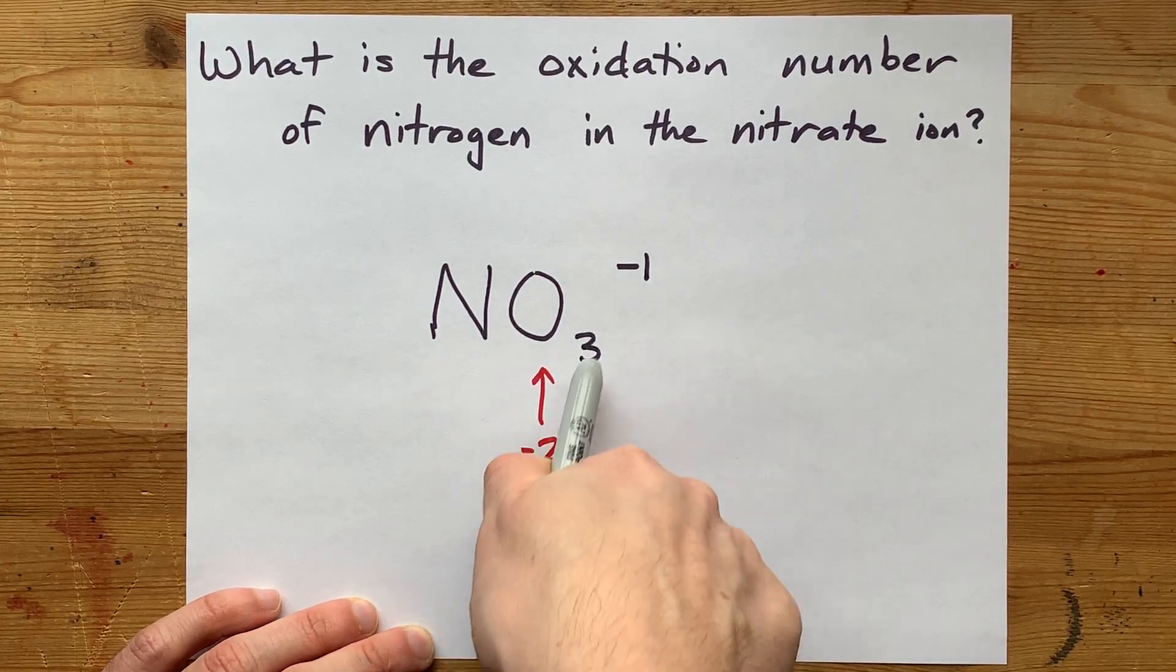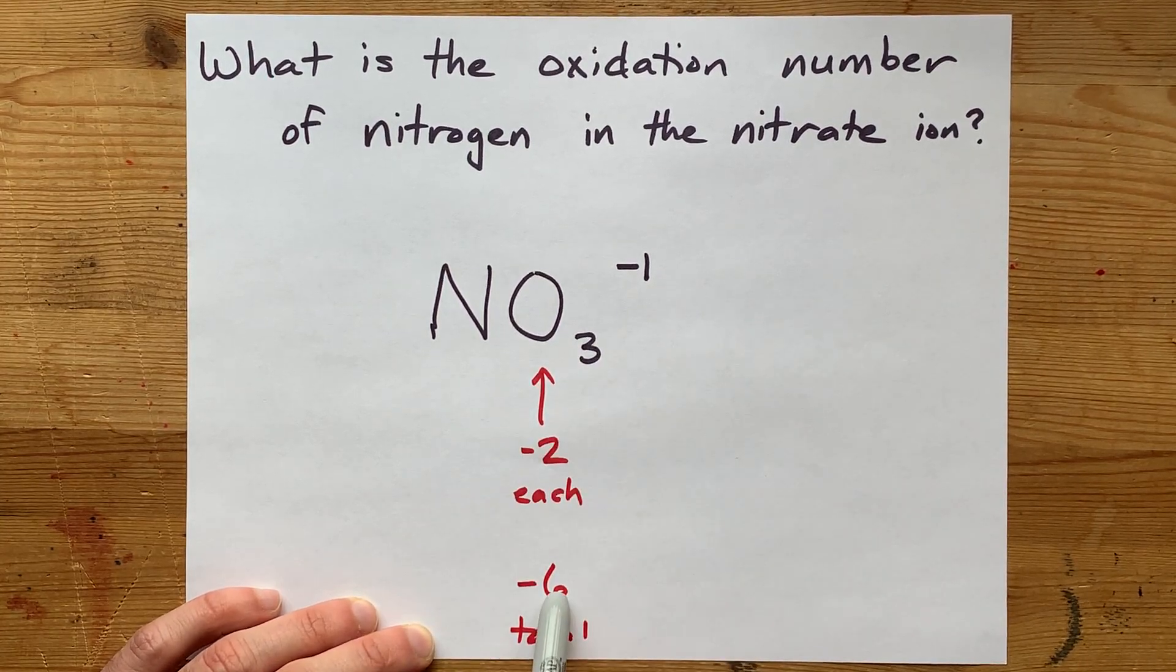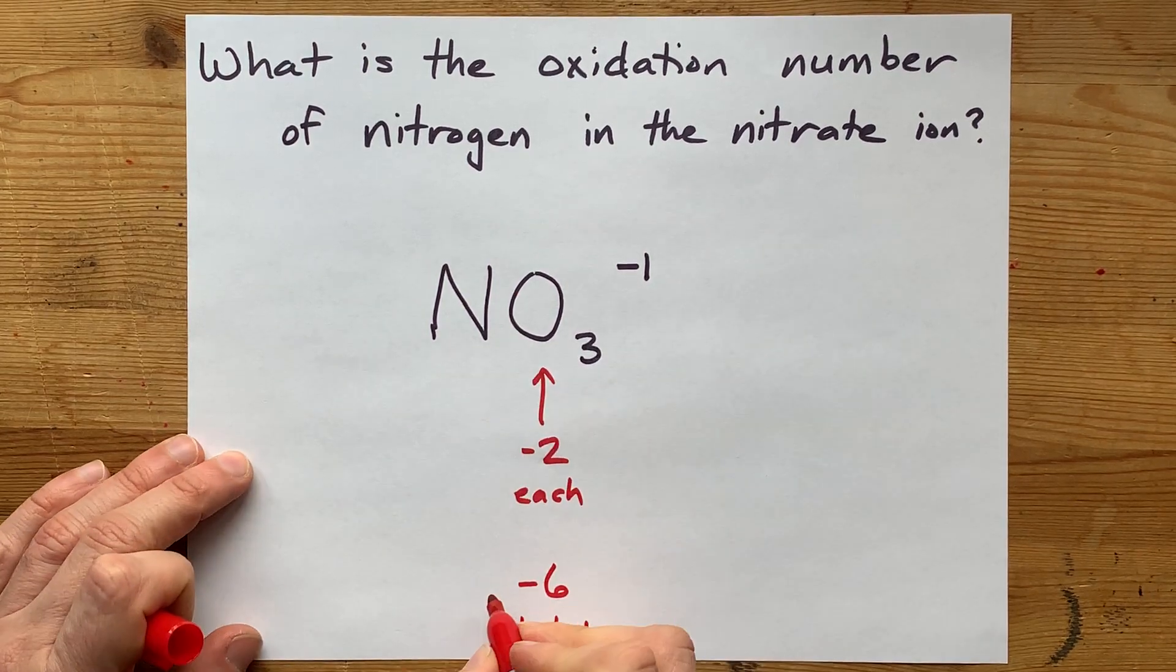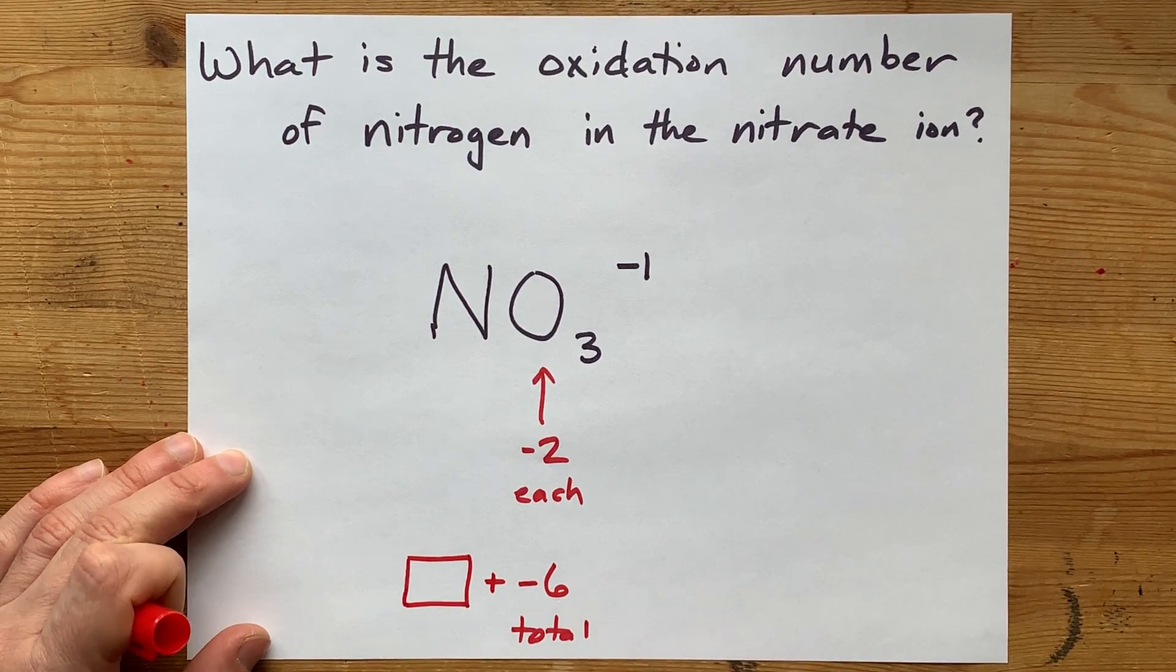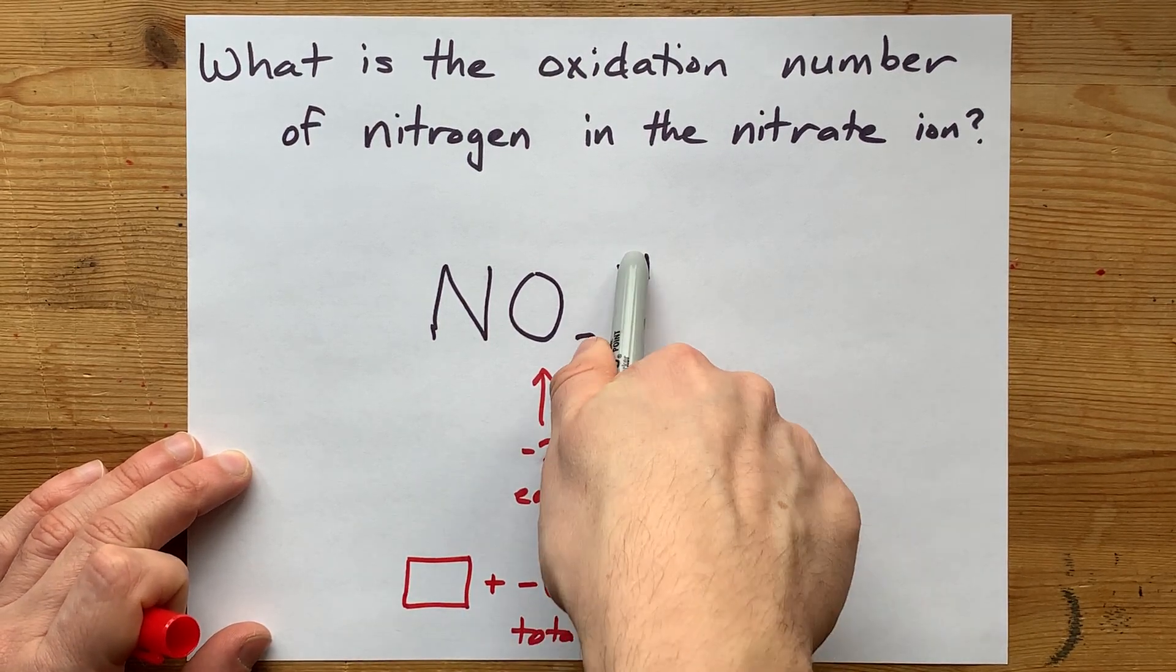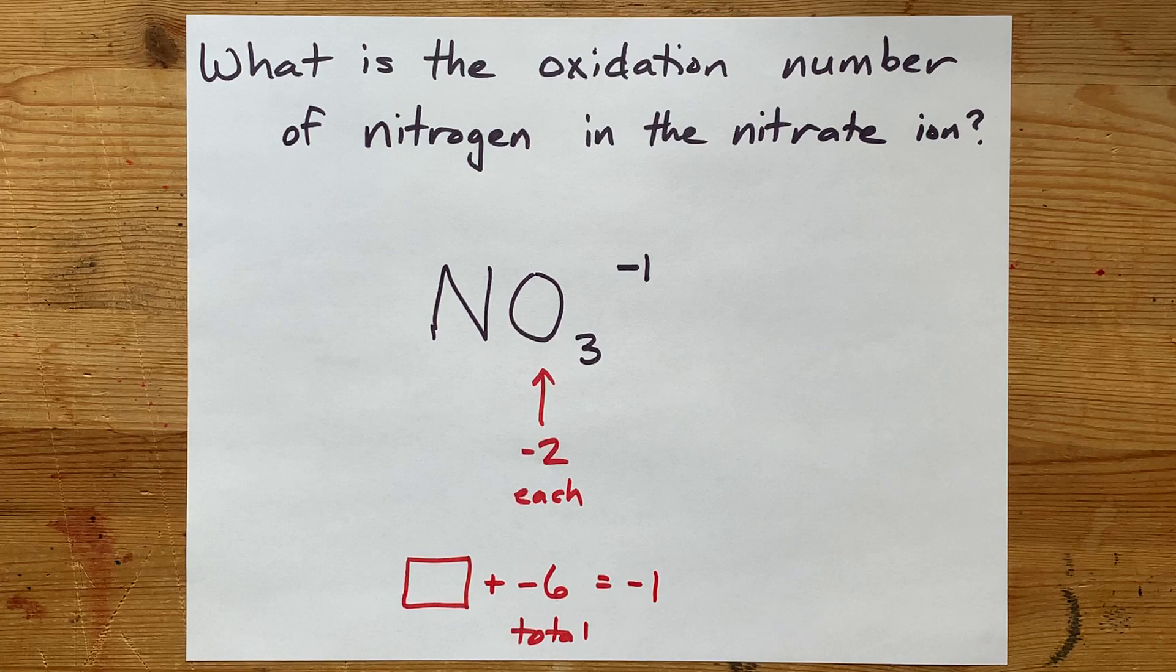Negative two times three gives me that minus six. When I combine that with whatever oxidation number I'm going to assign nitrogen, I'm supposed to get the overall charge on the particle, which is minus one.